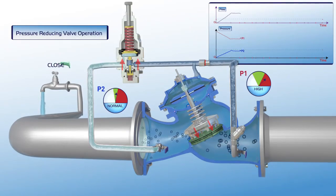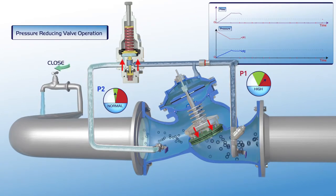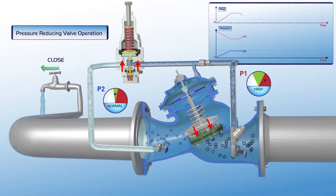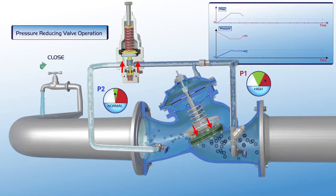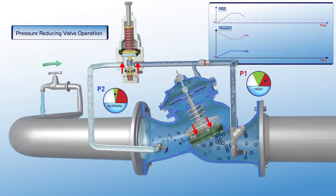When consumer water demand is reduced, the pilot responds immediately. The plunger moves slightly upwards, the pressure in the upper control chamber increases, and the valve closes slightly.